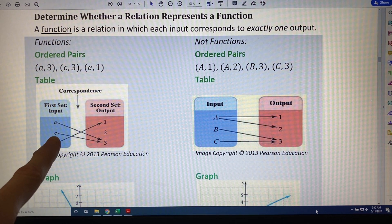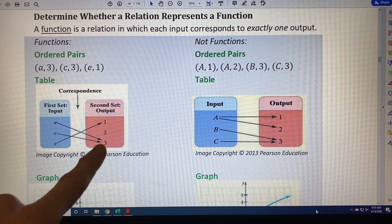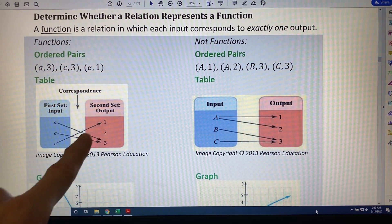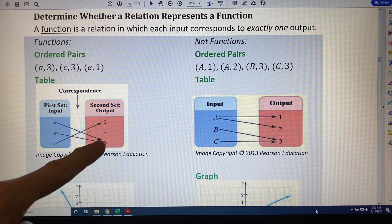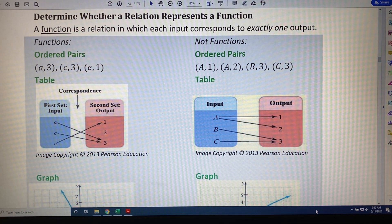c also points to 3. When the input is c, the output is 3. e points to 1. When the input is e, the output is 1. Notice that there is no input that leads to an output of 2.